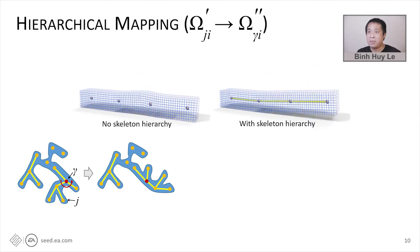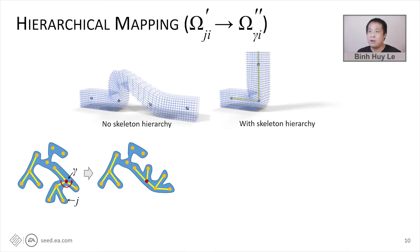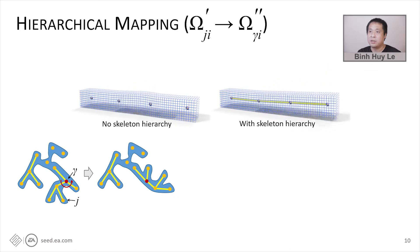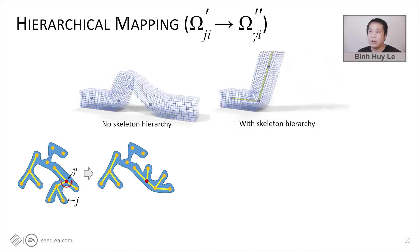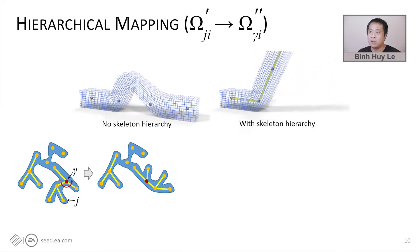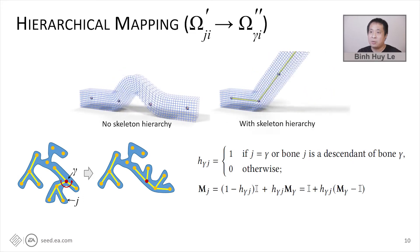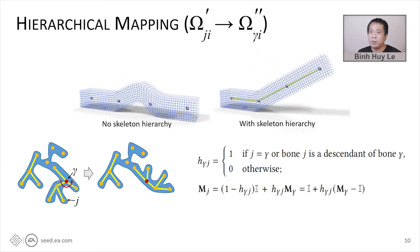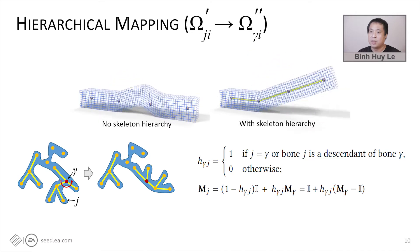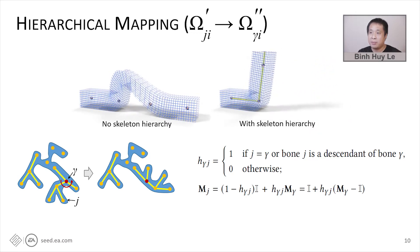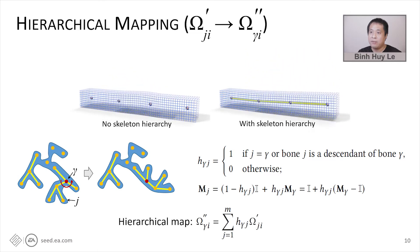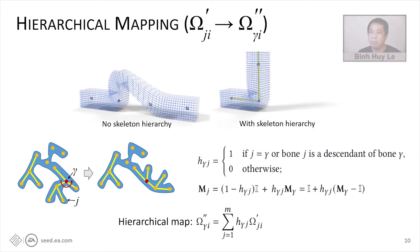The second map is the hierarchical mapping. When the bones are organized in a skeleton, each bone will propagate its transformation to all children. If we ignore the skeleton when sampling poses, its distribution will not match the distribution of poses at runtime with skeleton. To handle the skeleton, we compute a hierarchical matrix h and use it to compute the propagation on the bone transformation m sub j. And because the multiplication to h is linear, we can simplify the equations by moving h to the multi-weights. And we yield this hierarchical map.